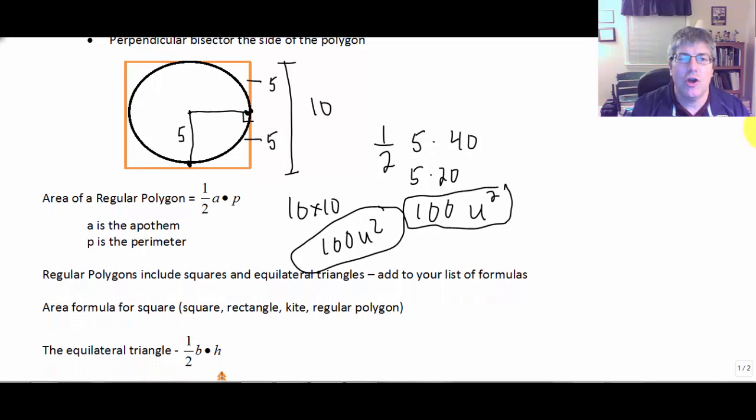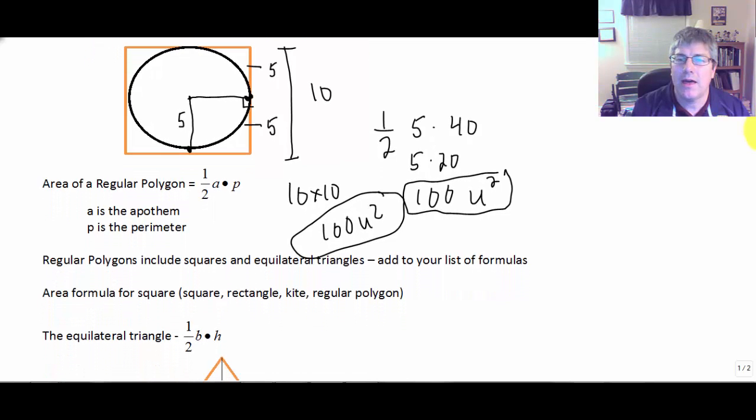So just a note that regular polygons include squares and equilateral triangles. So make sure you add this to your list of formulas. So for the area of a square, you use 1/2 A times P and equilateral triangles, kind of a subcategory of your triangles here. We can also use 1/2 A times P.